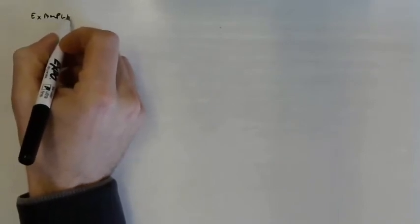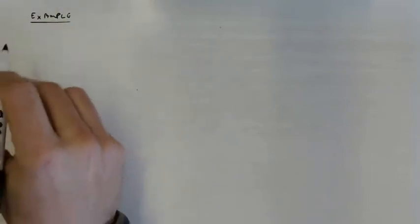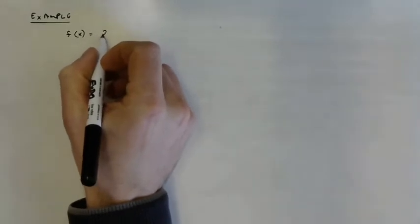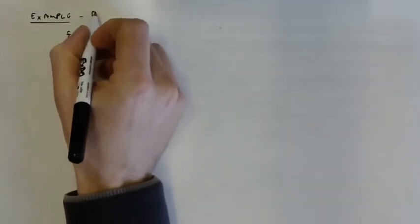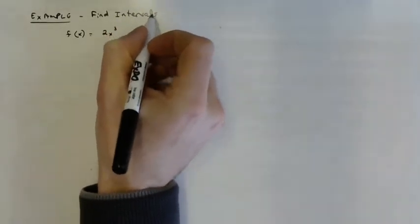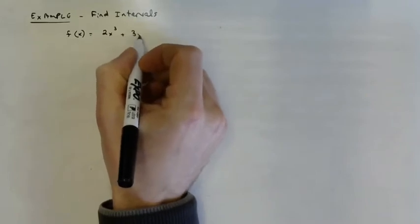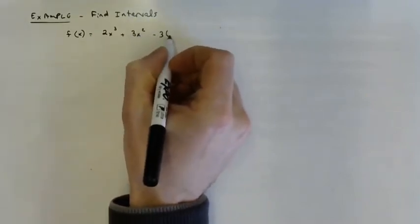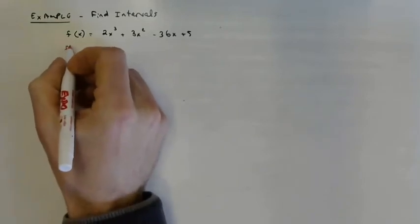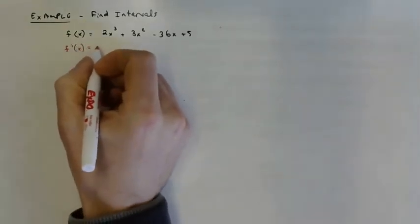Example one: find the intervals of increasing and decreasing. We have f of x equals 2x cubed plus 3x squared minus 36x plus 5. Go ahead and determine the derivative f prime of x and check up here when you're done.